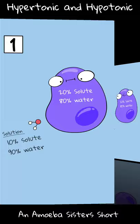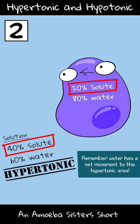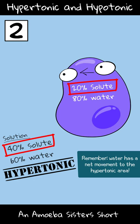In diagram 2, it's the solution that is hypertonic, as it has a higher solute concentration. The cell is hypotonic. A net movement of water would move out of the cell — it would shrivel.